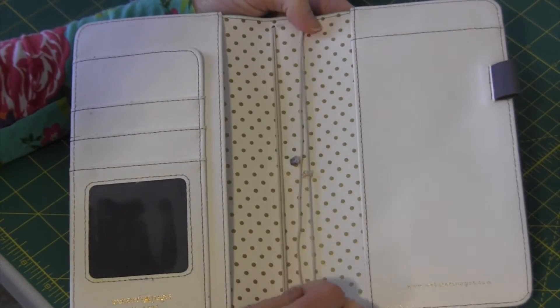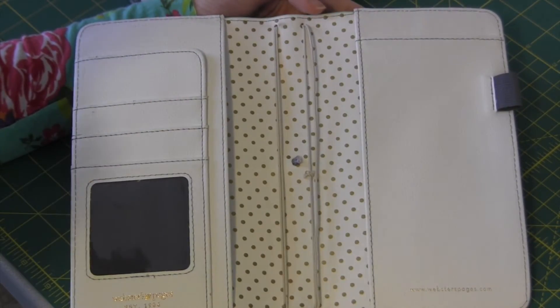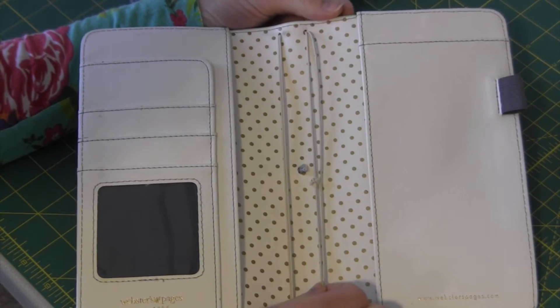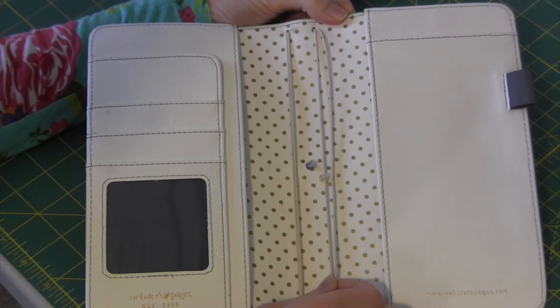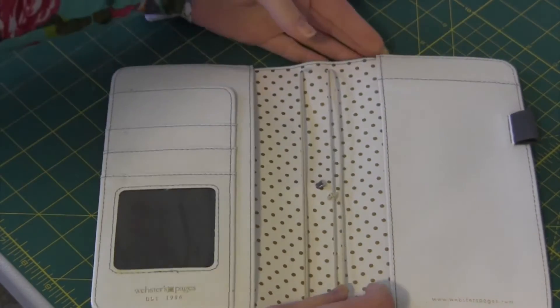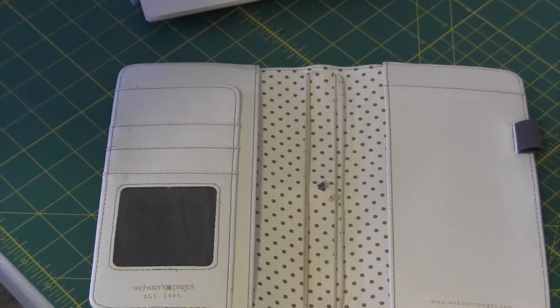Now this is what the inside of a traveler's notebook looks like. Some of them just have two elastics on the inside. This kind has four elastics on the inside. I like this because you can put so many books in here if you want to but it's really simple how these work.